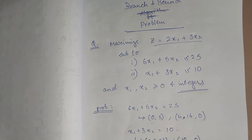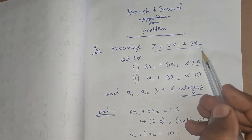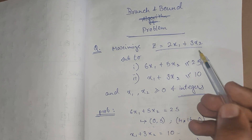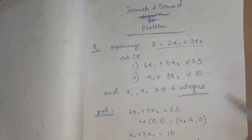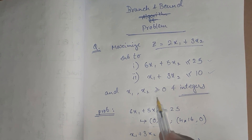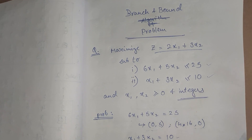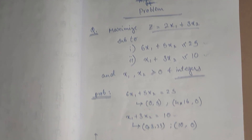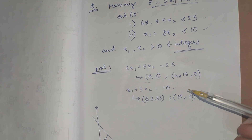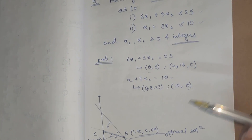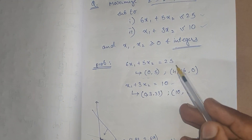For our example, we are given: maximize Z = 2x1 + 3x2, subjected to two constraints, where x1 and x2 should be greater than or equal to 0 and must be integers — meaning there should be no decimal values. We will first solve this using the graphical method.